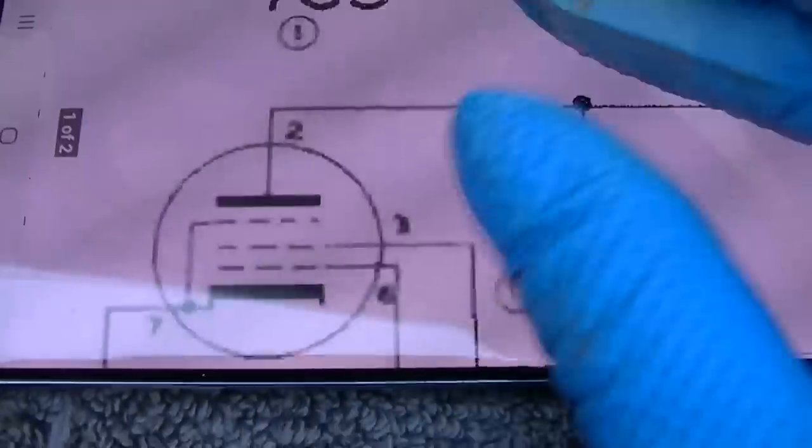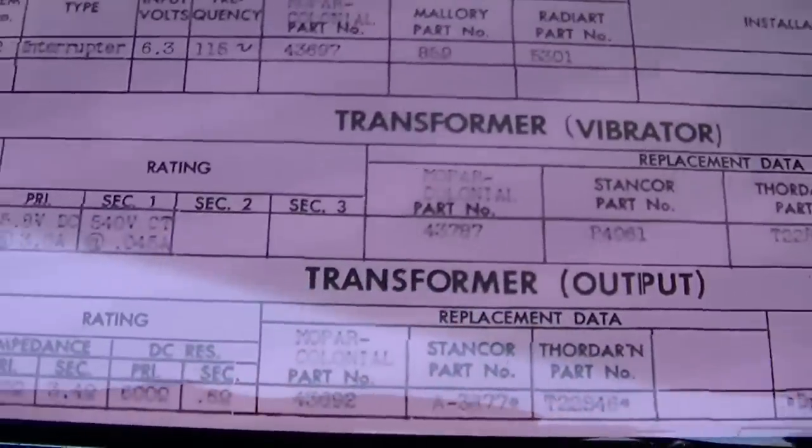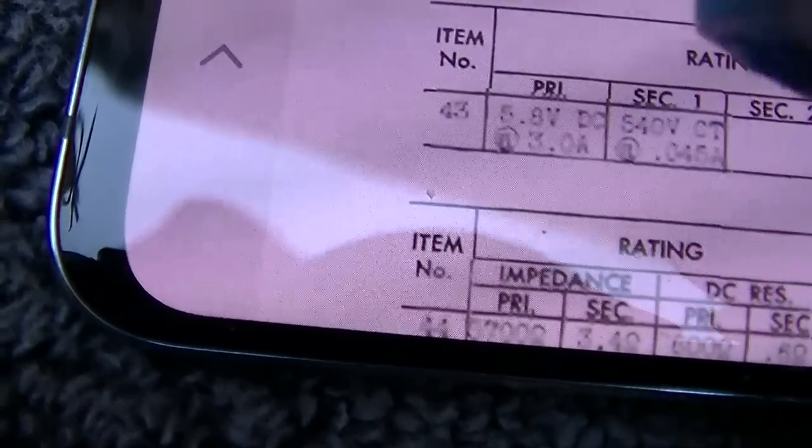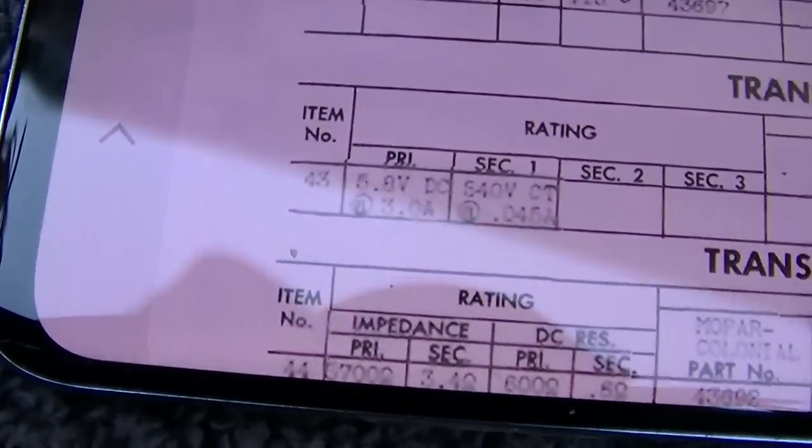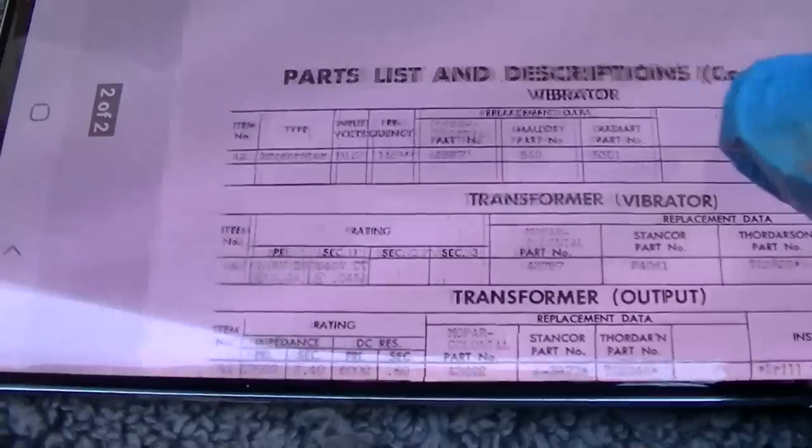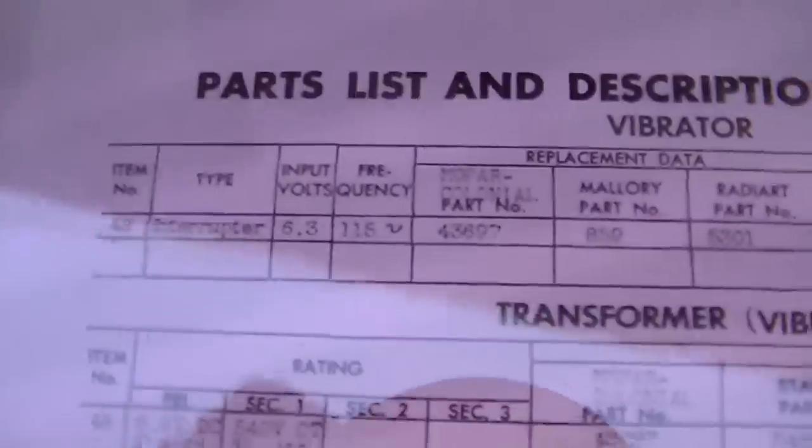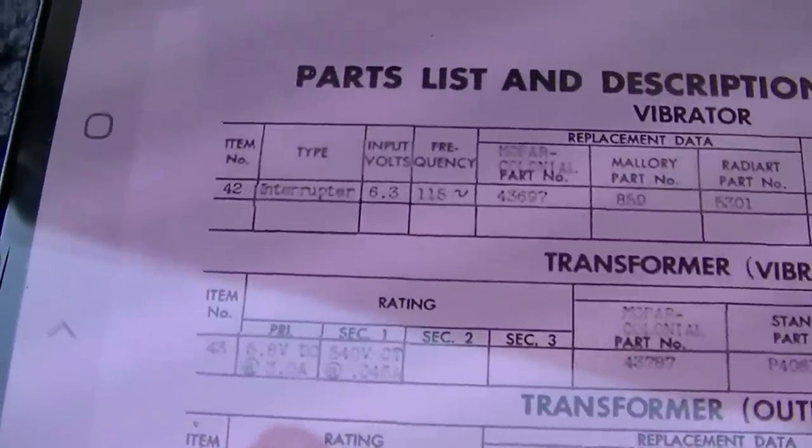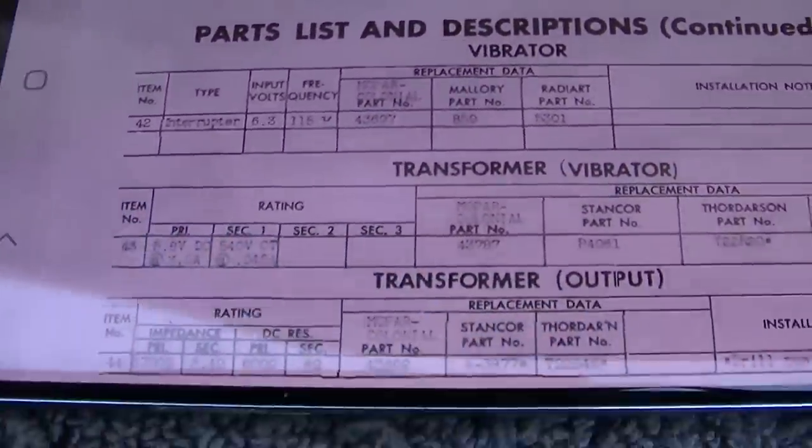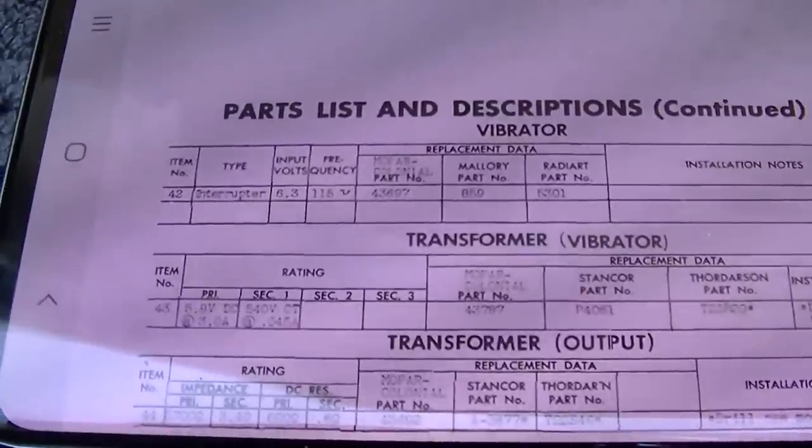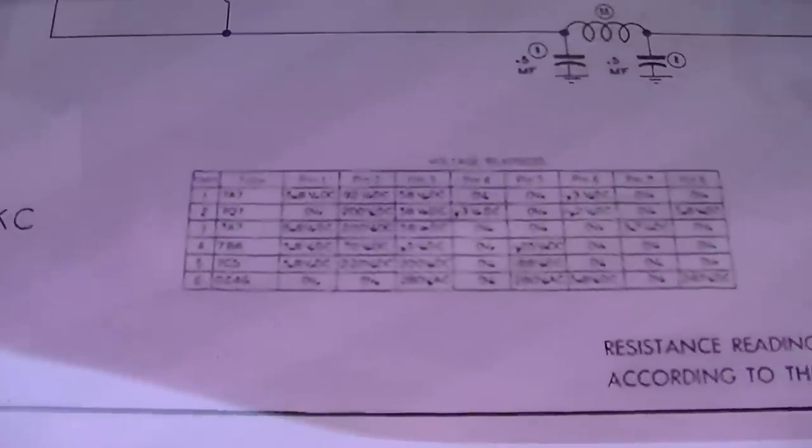So we want to know what pin 2 of the 7C5 is. Vibrator transformer. Primary is 5.8 volts. Secondary is 540 volts center tapped. So that confirms this is a 6-volt radio. And it looks like it's about 220 volts DC.